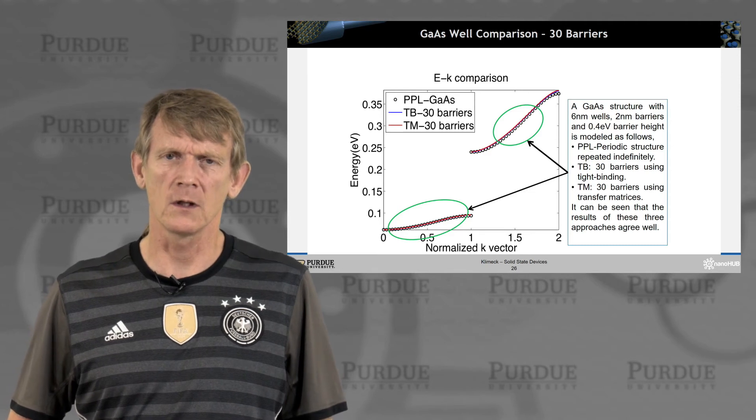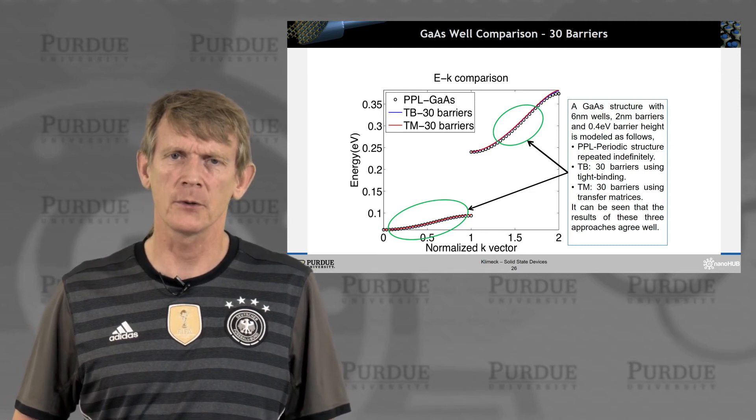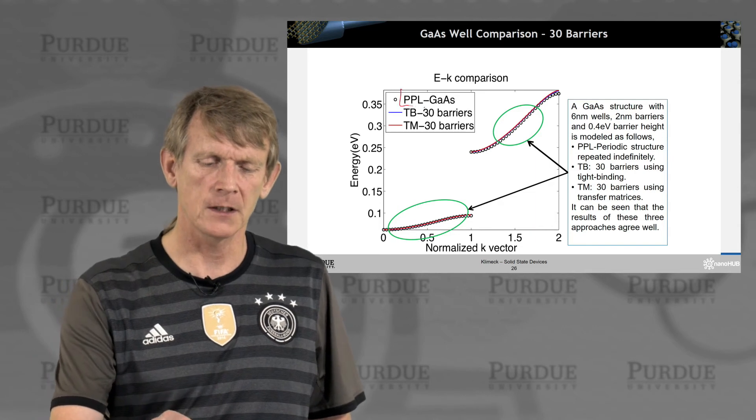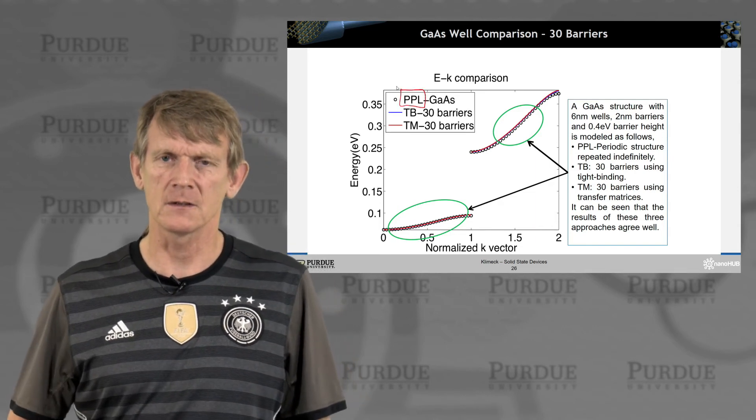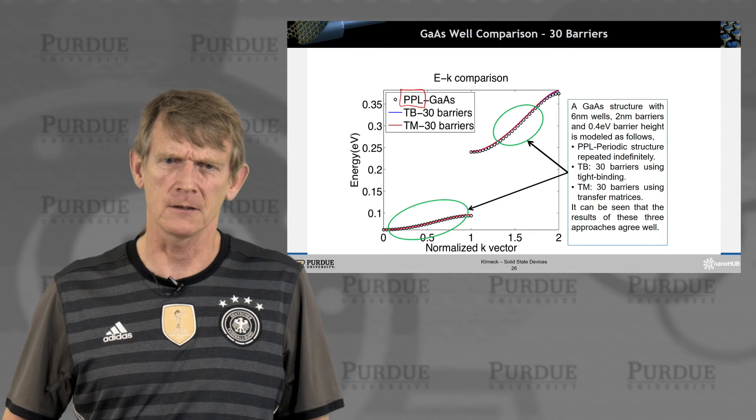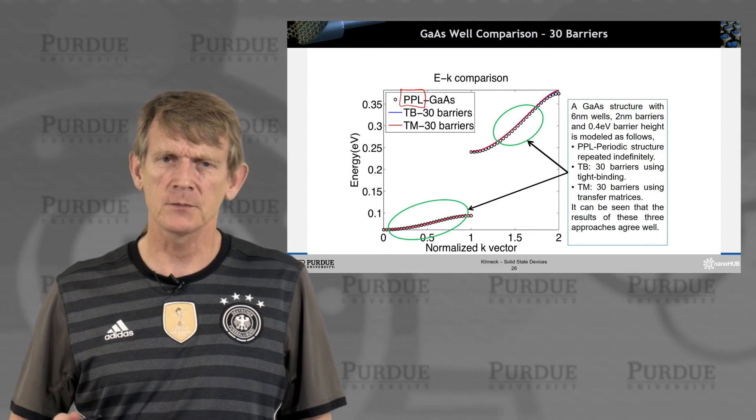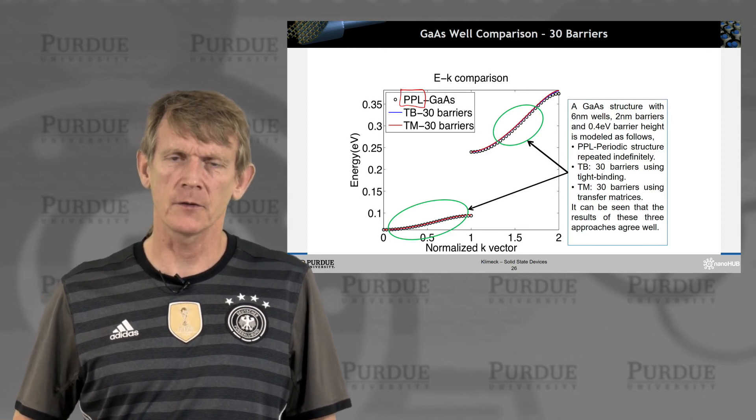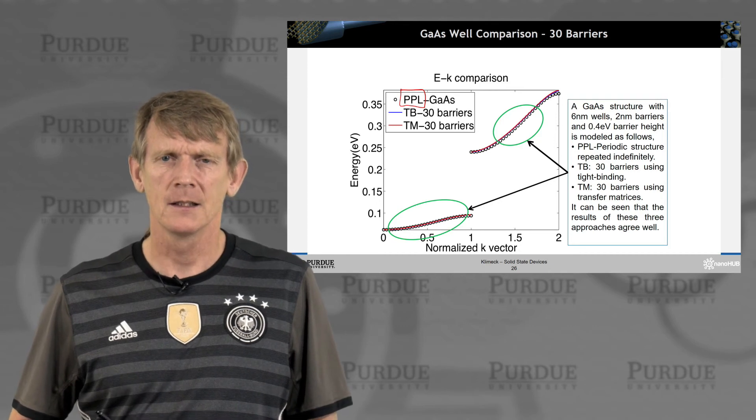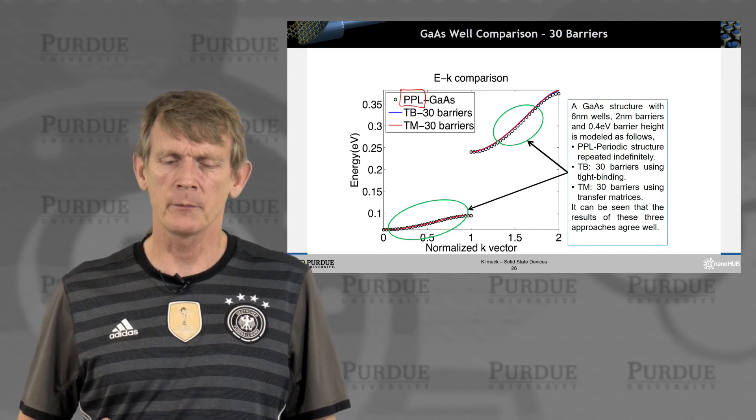and you can calculate this with a transmission matrix, or you can do it in the tool also with a tight binding numerical approach, or you can do this with a periodic potential lab. You get dispersions that are essentially laying on top of each other. So the concepts are very seemingly different, but the final result is the same, that you're forming bands.